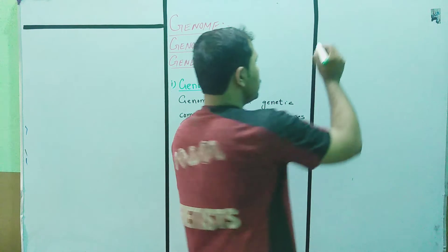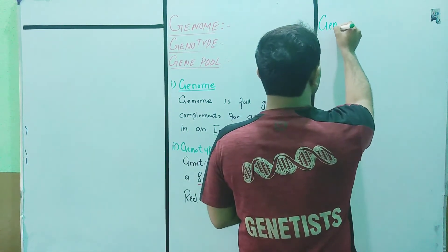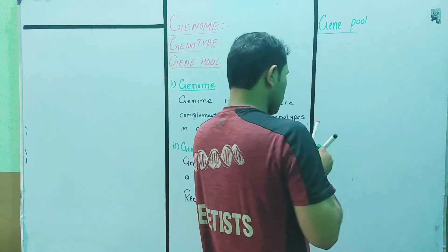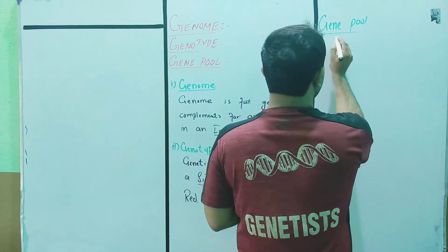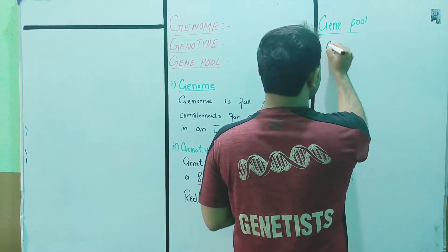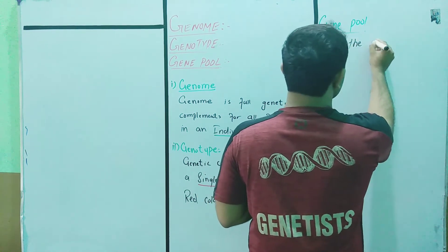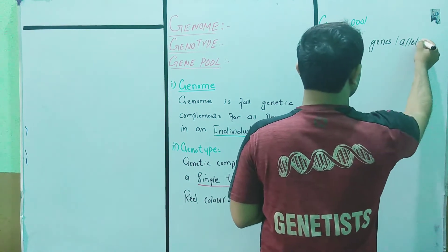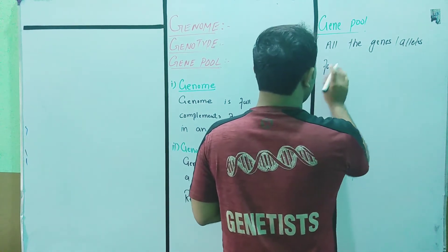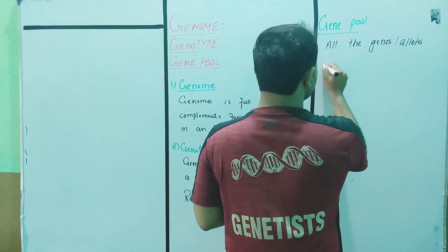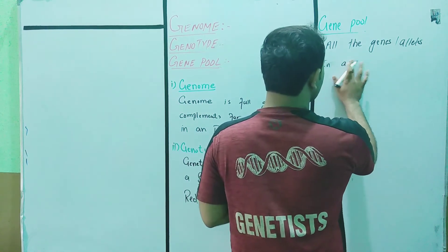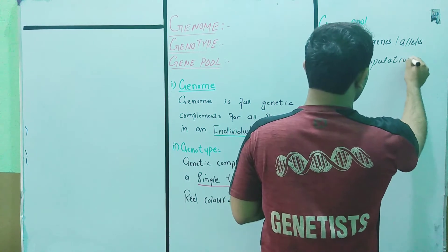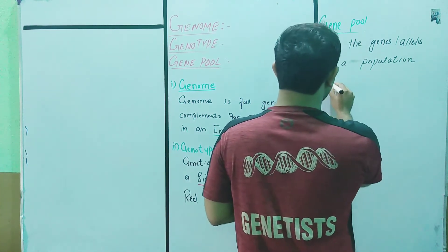Third term is gene pool. All the genes or alleles in a population.